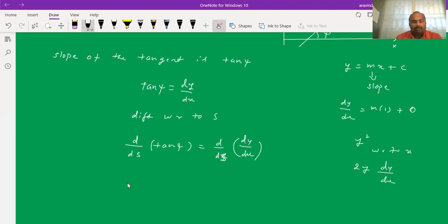Similarly, tan psi derivative with respect to s means the tan derivative will be secant square psi times d psi by ds. That equals d by dx of dy by dx times dx by ds.